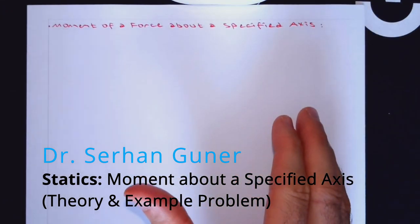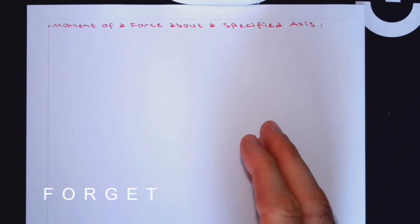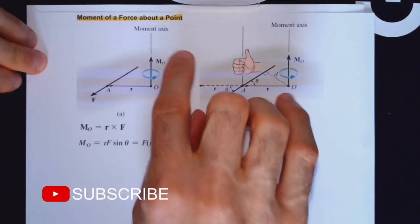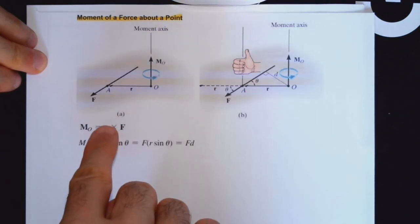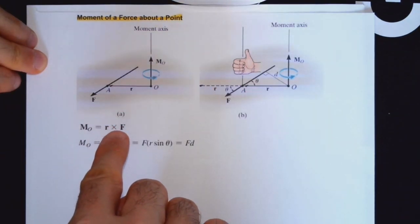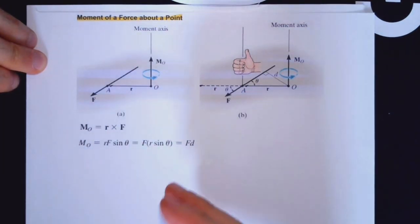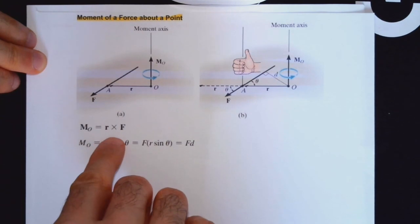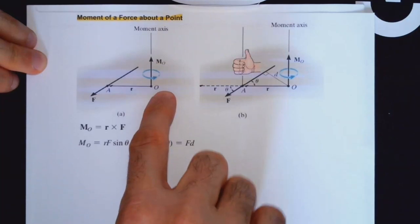This is different than our typical moment in which we take it about a point. Let me remind you that when you are taking a moment about a point what you need to do is a cross product. Moment is as we know whether in two dimensions or three dimensions it's the lever arm times the force which is r cross F. So you use cross product to get the moment about a certain point.